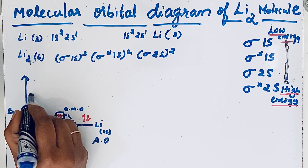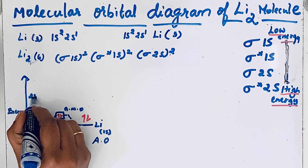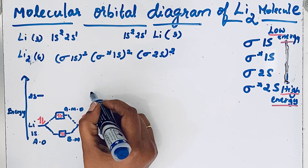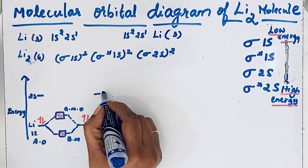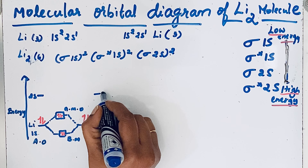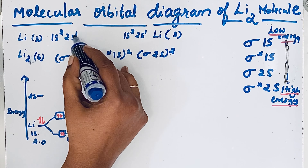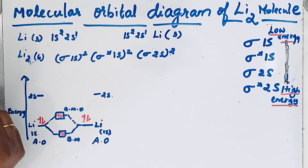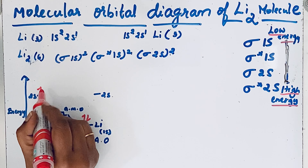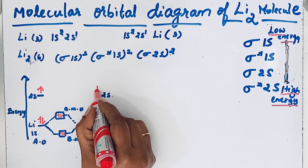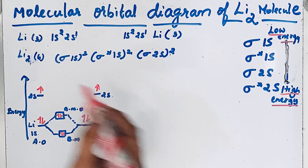For the lithium atom, the 2s orbital is next. The same applies for the other lithium atom — the 2s orbital. Each has one electron, so we draw one electron here and one electron there.